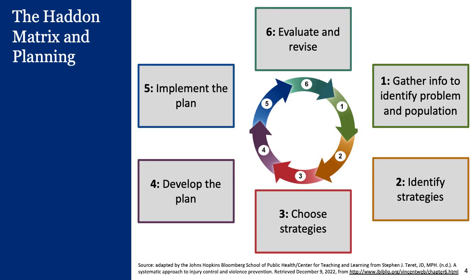Now let's talk about the utility of the Haddon Matrix with regard to planning. There's an old axiom that proper planning prevents poor performance. The Haddon Matrix's utility, among many, is to identify a menu of strategies that could be selected to yield the greatest public health benefit. We want to think of as many possible items within each cell that could be considered as the basis for intervention.